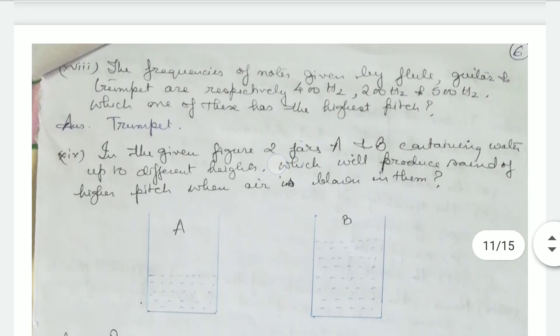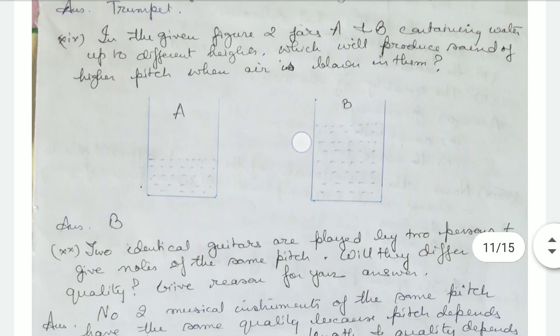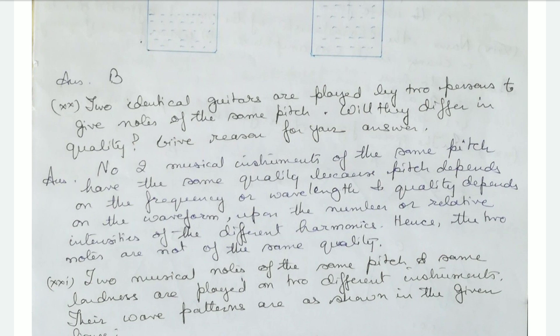The frequencies of notes given by a flute, guitar, and trumpet are 400 Hz, 200 Hz, and 500 Hz respectively. Which one has the highest pitch? The trumpet, because more frequency means more pitch. In a given figure, two jars A and B containing water up to different heights — which will produce a higher pitch when air is blown? Jar B, because the air column there is less, so the pitch will be more.